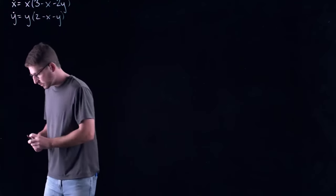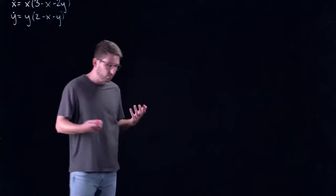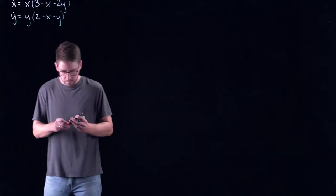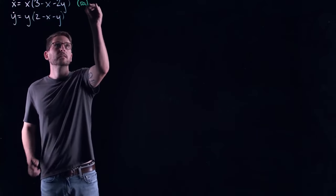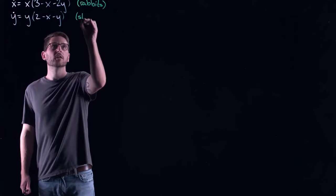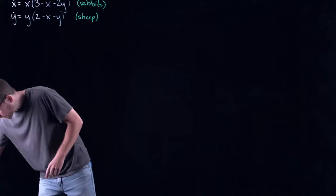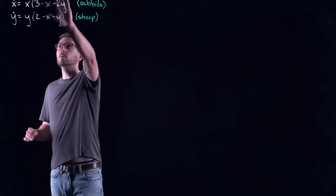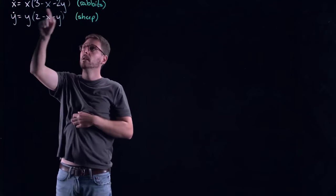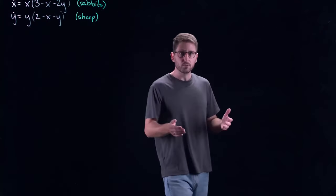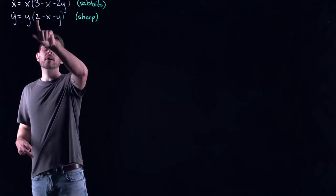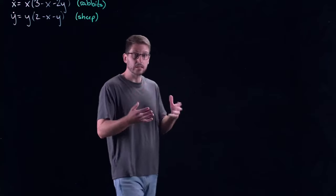I have two variables for my planar dynamical system. The x variable is my population of rabbits, and the y variable is my population of sheep. With our rabbit population, if you get rid of the sheep interaction, we just have a logistic growth model with an r value of three, reflecting the fact that rabbits reproduce very quickly. The sheep model has an r value of two, so they grow at a slightly slower rate.